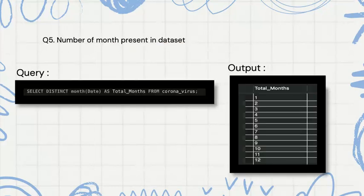Then we are checking the number of months present in the dataset, and we have 12 months. We are using the DISTINCT function, which removes duplicate values and shows only a single value at a time.